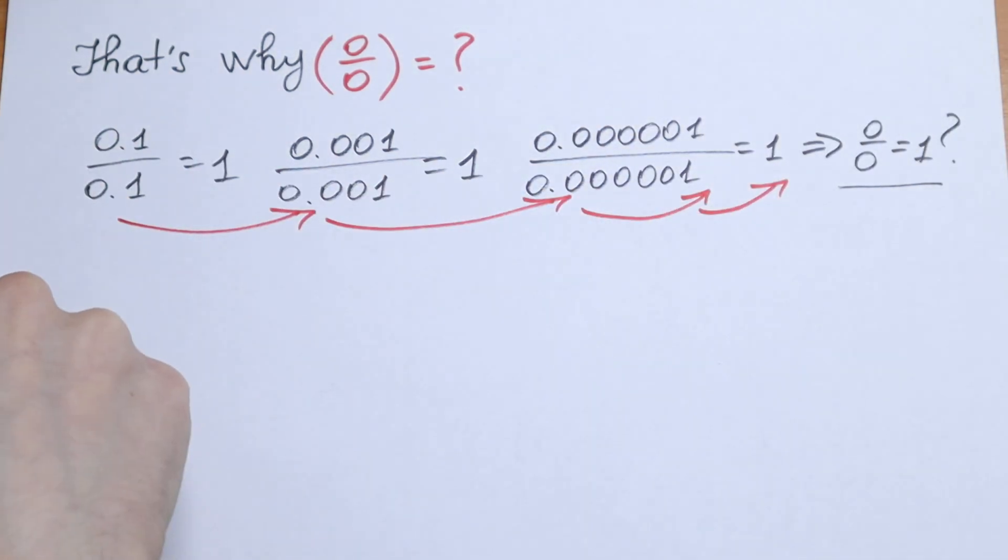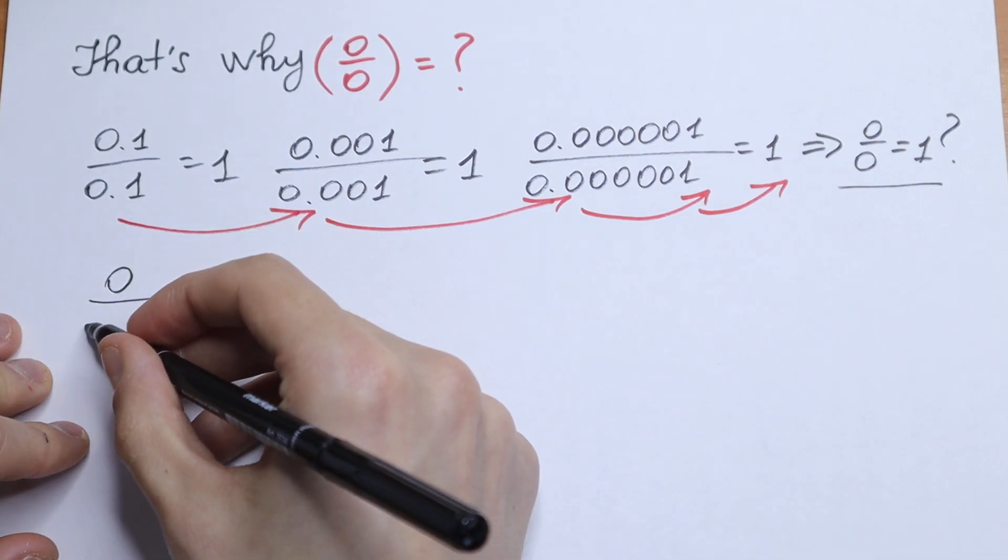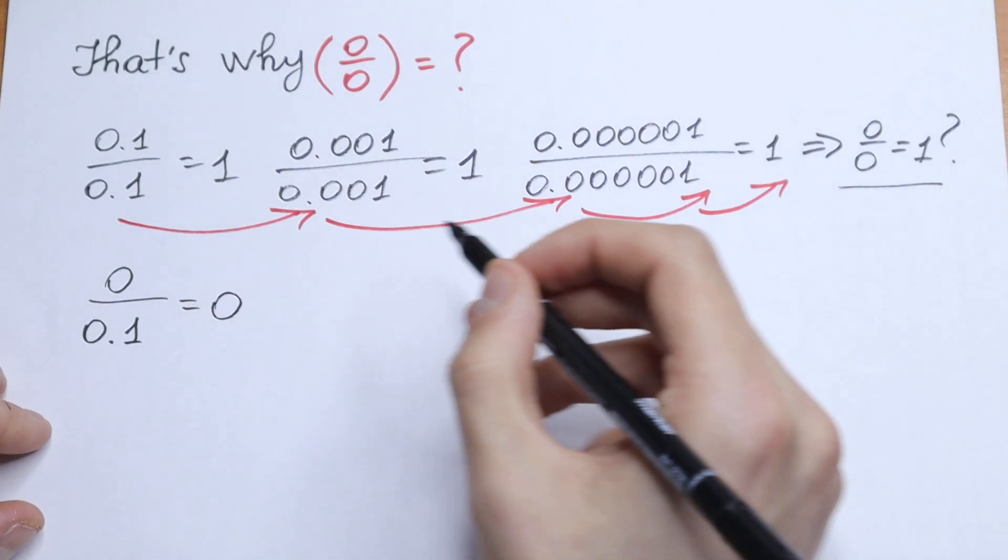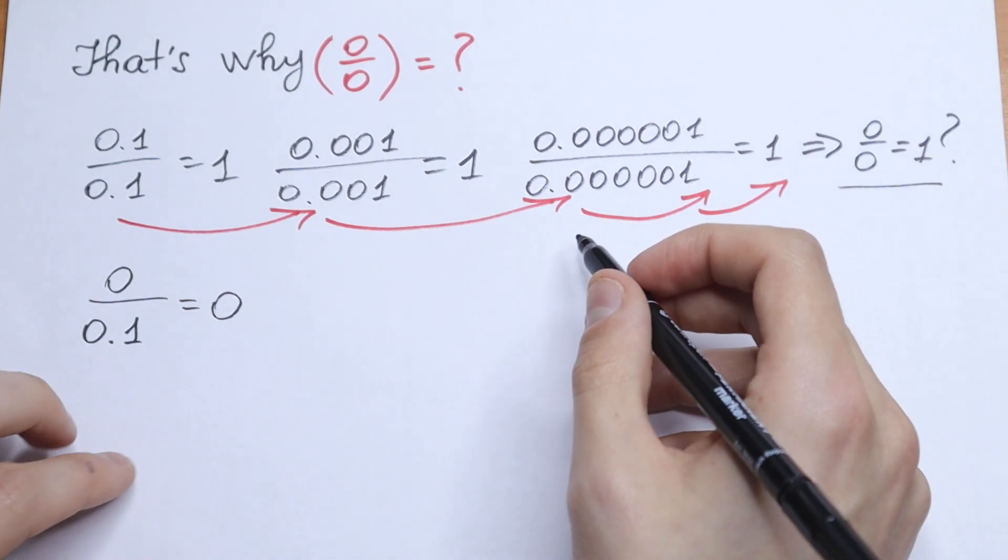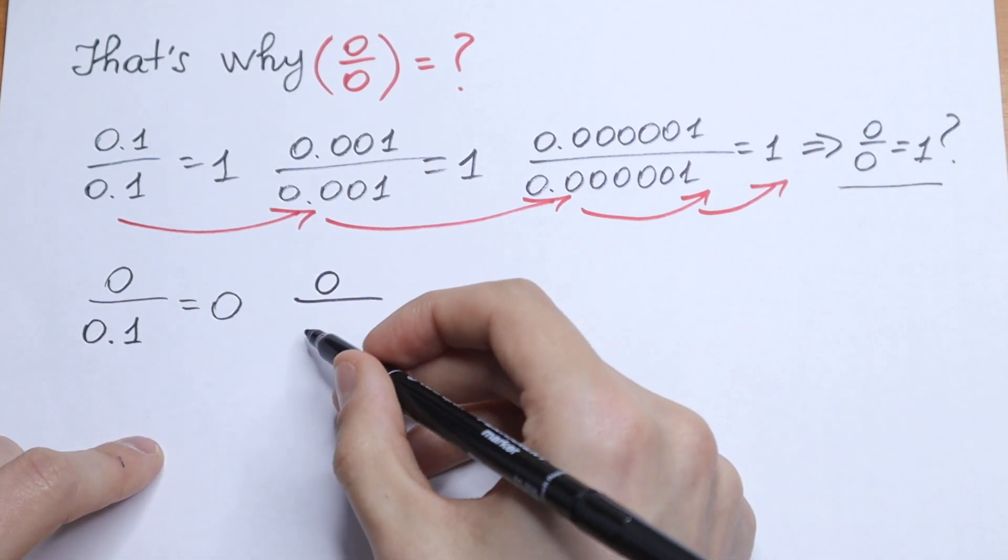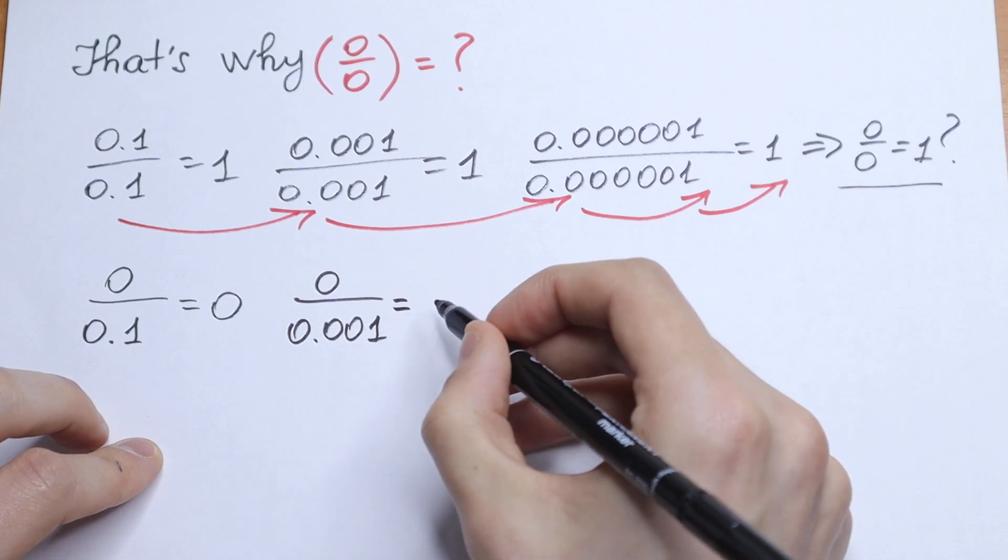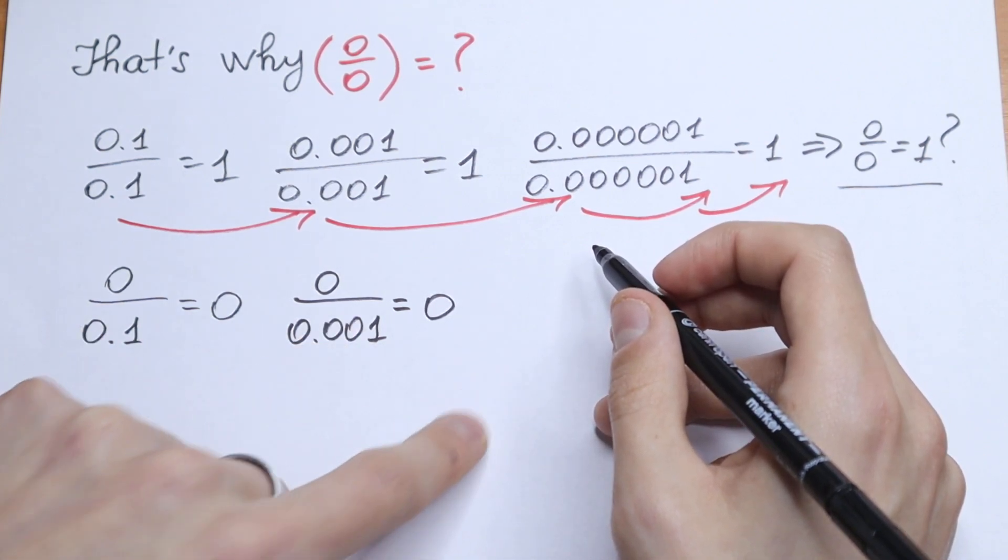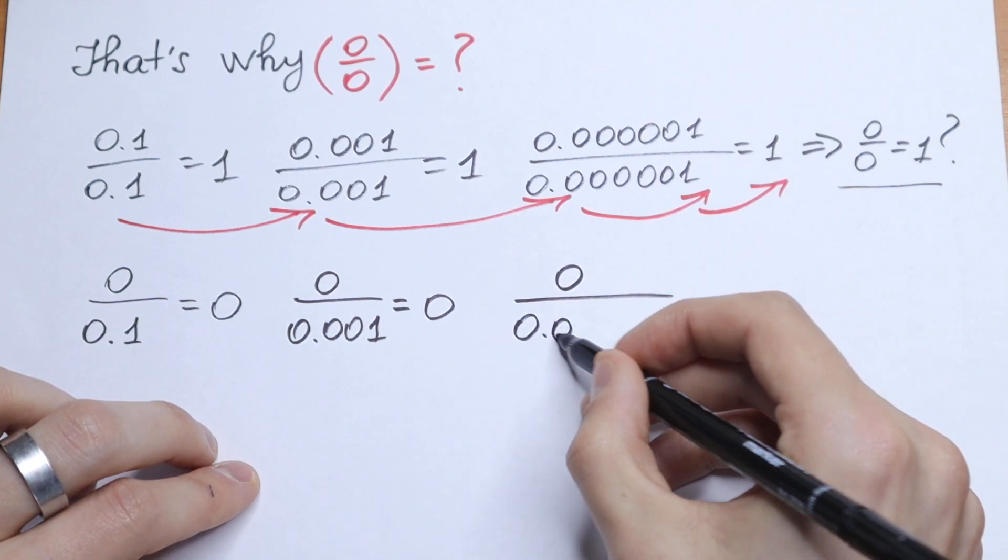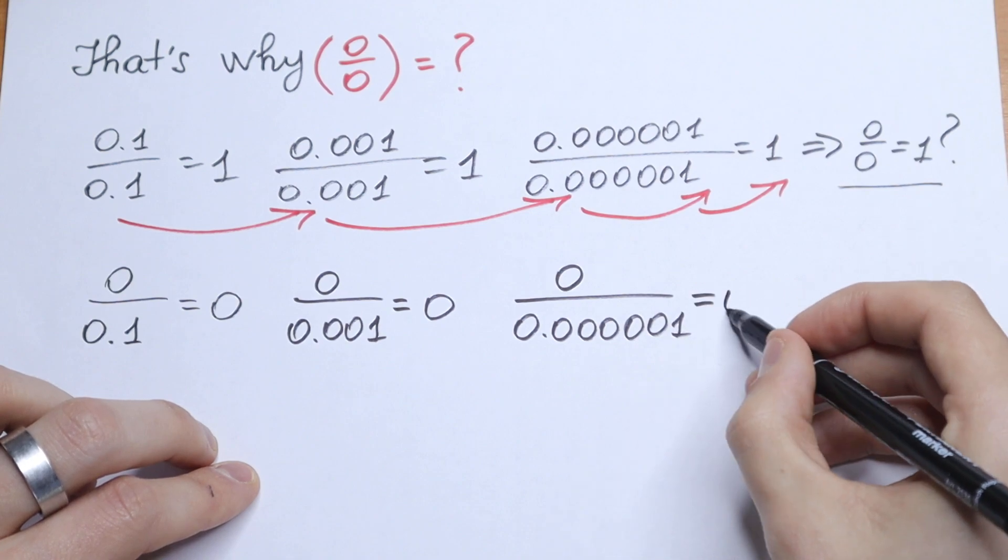If we get in closer and closer to 0 using that logic, if we have 0 divide it by 0.1, we will have as a result 0. And let's get in closer and closer to 0. Let's divide this 0 by 0.001. As a result we will have 0. Let's get in closer and closer. Let's divide this 0 by 0.0000001. As you know we will have 0.